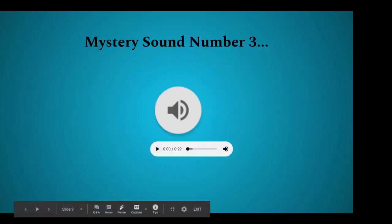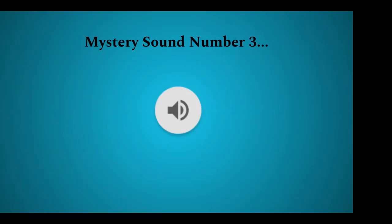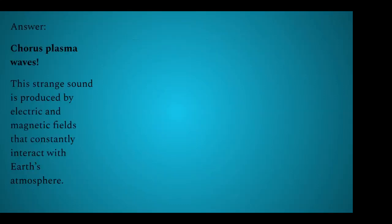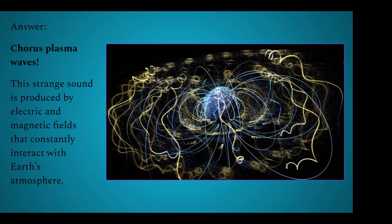Here's our third mystery sound. What another strange sound that was. This actually comes from not too far away from us, it's from the Earth. They're called chorus plasma waves. This strange sound is produced by electric and magnetic fields that are constantly interacting with the Earth's atmosphere. There's an invisible magnetic and electric field that surrounds our planet, and there are several types of plasma waves that can happen.